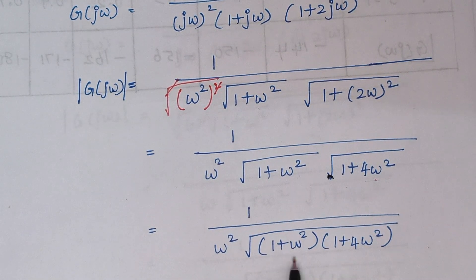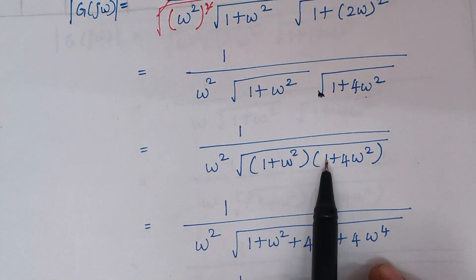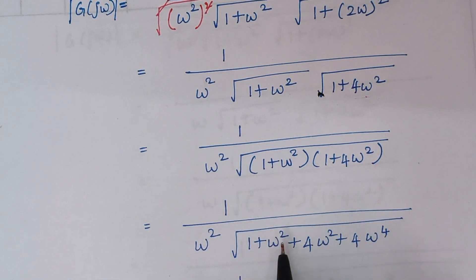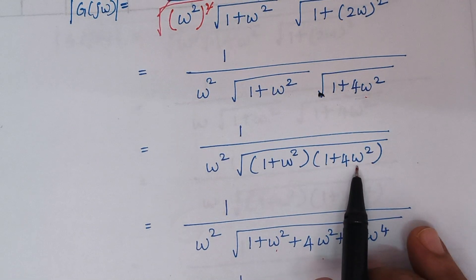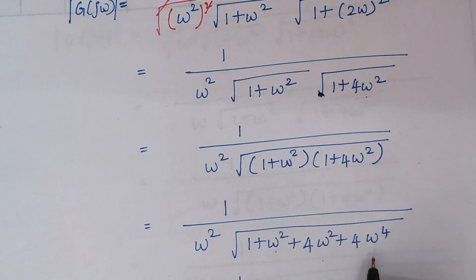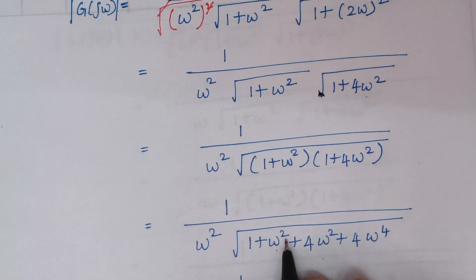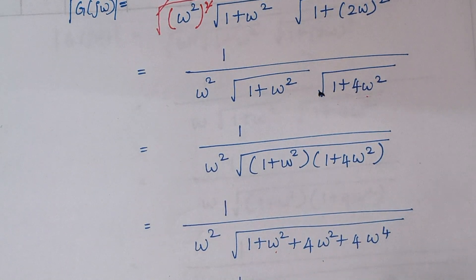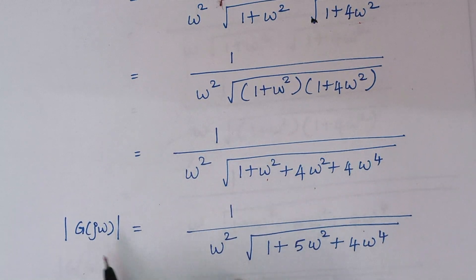Now we multiply these two terms. 1 into 1 is 1, 1 into ω squared is ω squared, 4ω squared into 1 is 4ω squared, and 4ω squared into ω squared is 4ω to the power 4. Simplifying: ω squared plus 4ω squared is 5ω squared, plus 4ω to the power 4. So this is my final expression for the magnitude.